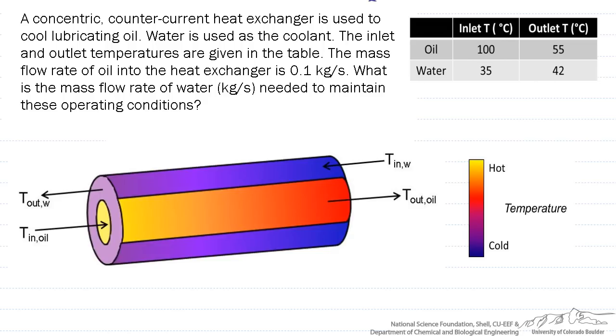We're going to consider this a counter current system, where the oil and water flow in different directions. If our mass flow rate of our oil is 0.1 kilograms per second,